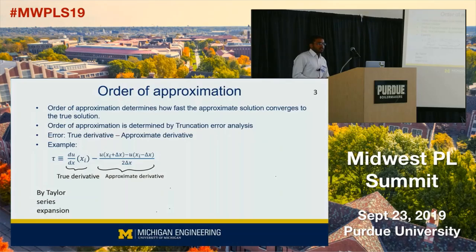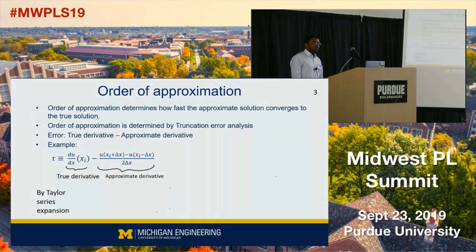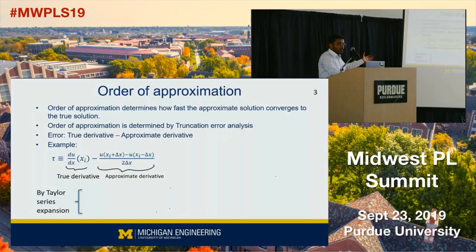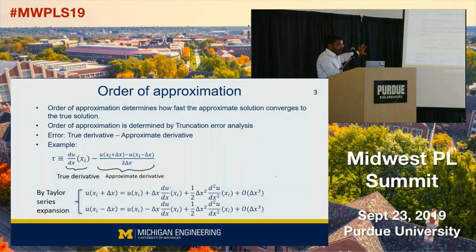Order of approximation determines how fast the approximate solution converges to the true solution, and it is determined by a truncation error analysis. The error is defined as the difference between a true derivative and an approximate derivative. In this talk, we have an example of a scheme which computes the derivative using two discrete function values at x_i plus delta x and x_i minus delta x. We use the Taylor series expansion of the functions, and after doing certain algebraic operations, we conclude that the error is of order delta x squared.